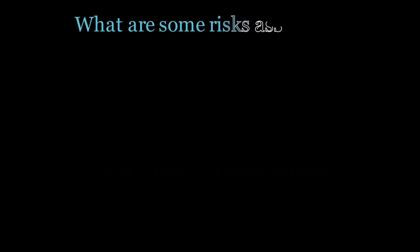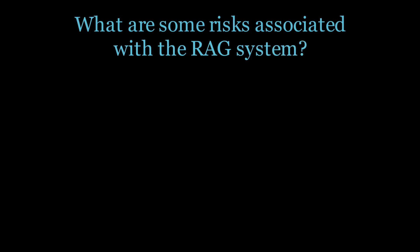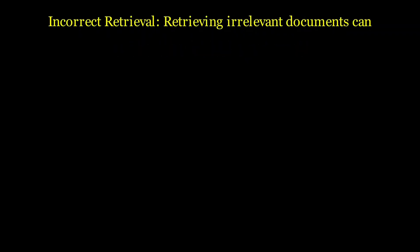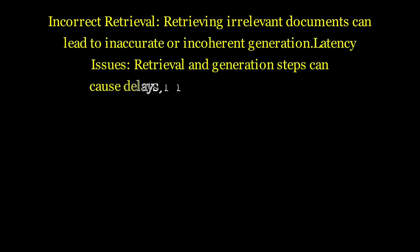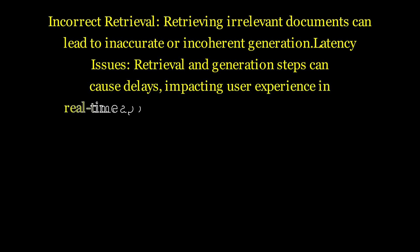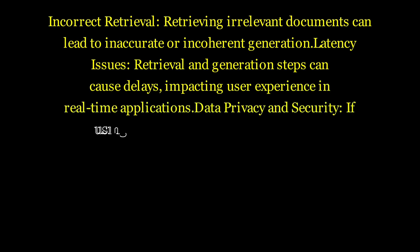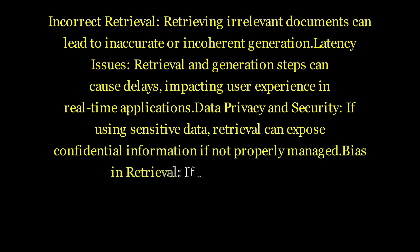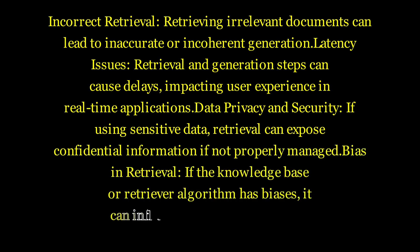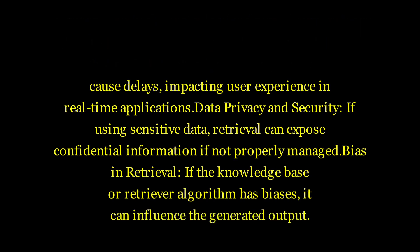What are some risks associated with RAG systems? Incorrect retrieval of irrelevant documents can lead to inaccurate or incoherent generation. Latency issues from retrieval and generation steps can cause delays impacting user experience in real-time applications. Data privacy and security risks arise if sensitive data retrieval exposes confidential information when not properly managed. Bias in retrieval can occur if the knowledge base or retriever algorithm has biases, influencing the generated output.